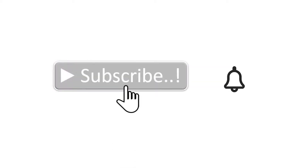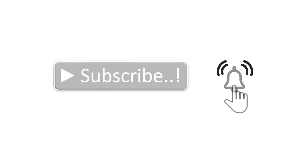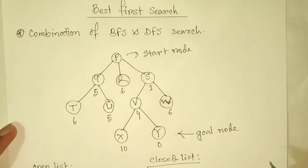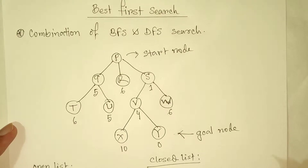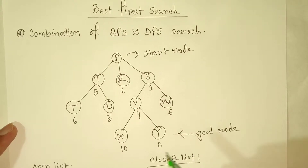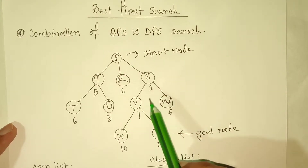Hello everyone, I'm Asif. Today we are going to see a search algorithm of artificial intelligence which is called Best First Search algorithm. Best First Search algorithm is a combination of BFS and DFS search algorithms. We have been given a tree here and we have to apply Best First Search on this tree.